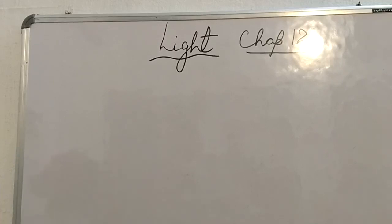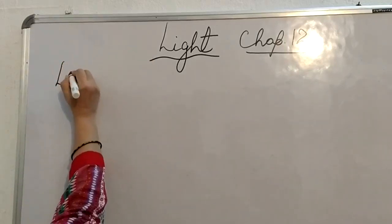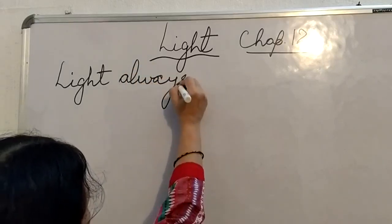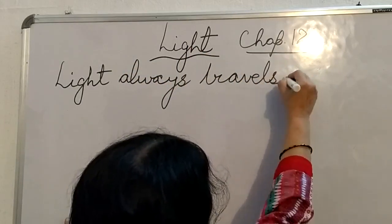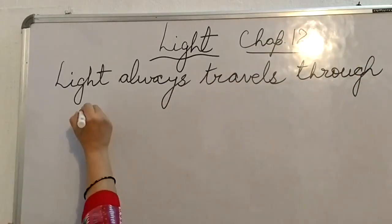You might have seen a beam of sunlight when it enters a room through a narrow opening or through a hole. You may have also seen beams of light from the headlight of scooters, cars, buses, etc. Similarly, a beam of light can be seen from a torch also. So on the basis of all these experiences, we can say that light always travels along a straight path.